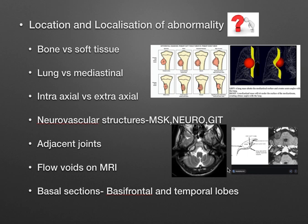Once the abnormality is located, you need to localize it — bone versus soft tissue, lung versus mediastinal lesion. For brain lesions, look for the cleft sign, buckling sign, and other features to differentiate intra-axial from extra-axial lesions. Always look at neurovascular structures — in musculoskeletal, neurology, or GIT cases, neurovascular structures give important clinical clues for diagnosis.